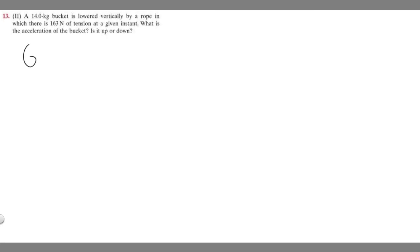So let's go ahead and write down what we're given. The bucket weighs 14 kg, so the mass is 14 kg. We also know that it's lowered vertically by a rope in which there is 163 newtons of tension. So we know newtons is force, so force of T for tension, equals 163 newtons.